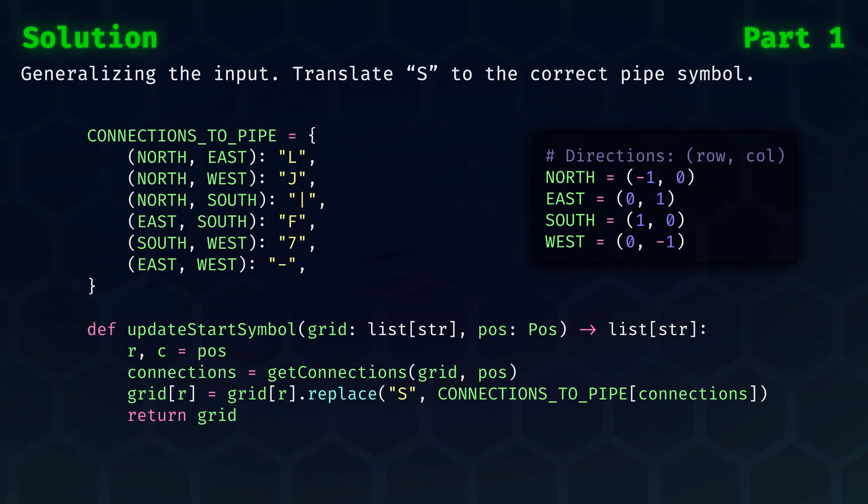Slightly more involved is generalizing the input and replacing the letter S with the pipe symbol that it represents. But given the grid and the position of the start, we can check to which adjacent fields it connects. I provide this as a tuple of directions, since every pipe connects two directions.